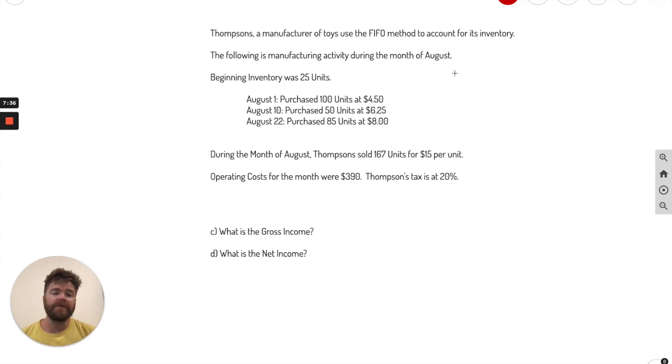Okay, so same data set really, but a few different questions. Now it's asking, what is the gross income? Then what is the net income? Well, all we got to do here for gross income, first, we got to get our sales, because that's the very first step to get our income. So sales, we know it. It's 167 times the $15. So let's multiply that out. Sales will be $2,505.